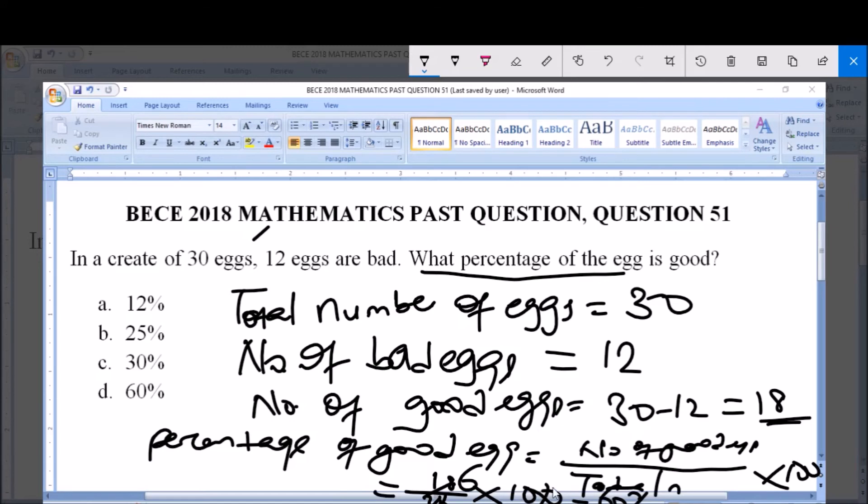So therefore, the percentage of good eggs is equal to 60%. Now from the options, option A says 12% which is wrong, B says 25% which is wrong, C says 30% which is wrong, and D says 60% which is correct.